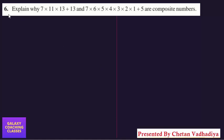Hello friends, my name is Chetan Vadhadya and today we are going to solve CBSE class 10th maths exercise 1.2 question number 6. Explain why 7×11×13+13 and 7×6×5×4×3×2×1+5 are composite numbers.